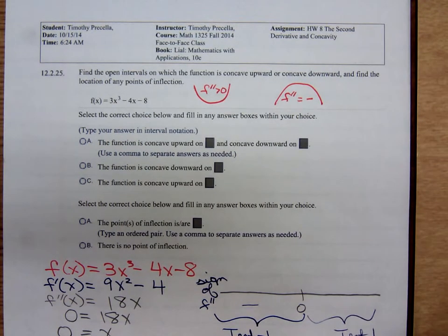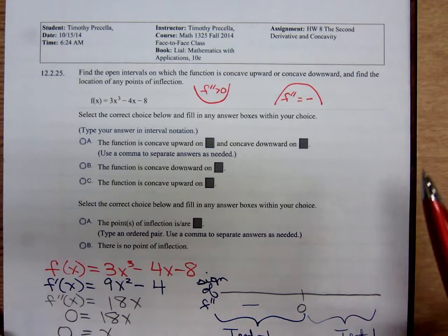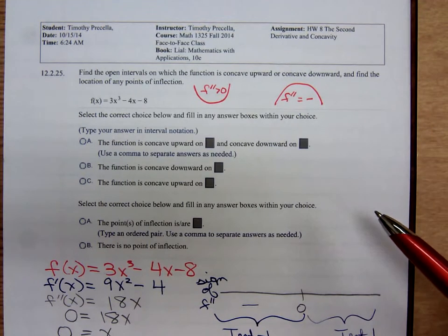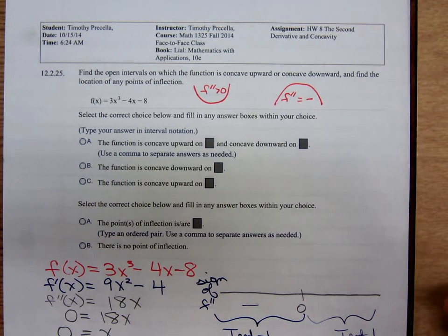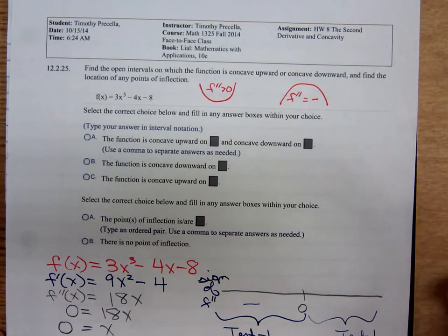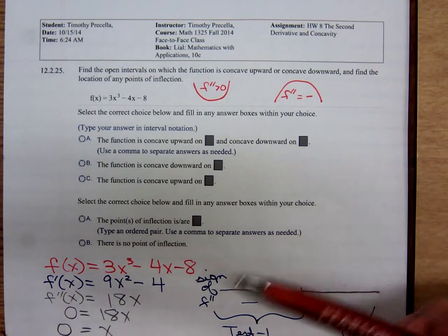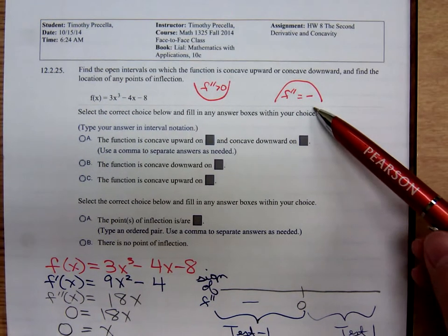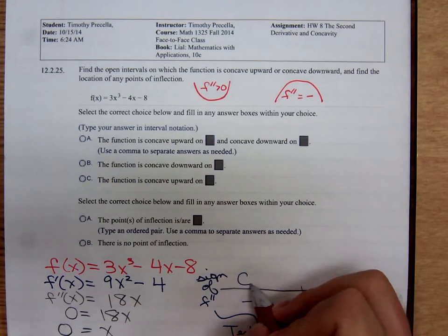the motion sensor just cut out the lights again. Just forgive me when the lights go out here. Coming back to what we were doing. When f double prime is negative, the graph is concave downward.